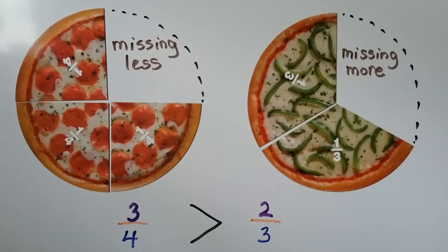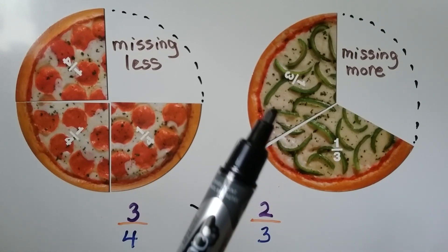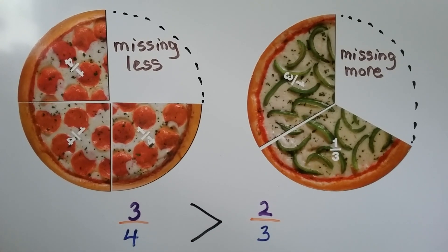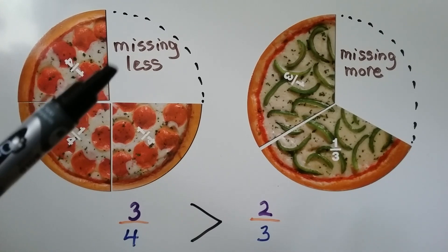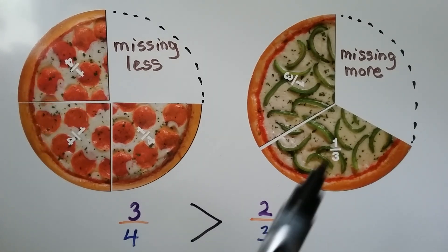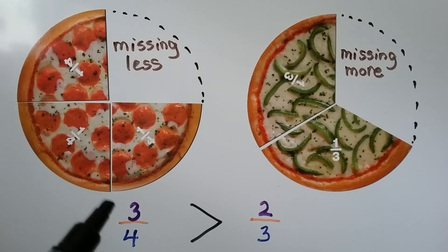Let's try it again. Here we're comparing three-fourths and two-thirds. We have three one-fourth pieces, and here we have two one-third pieces. We can see that this pizza is missing less — this one is missing more, there's a bigger piece missing. So we know that three-fourths is greater than two-thirds because it's not missing as much from the whole thing.